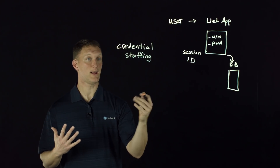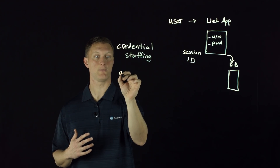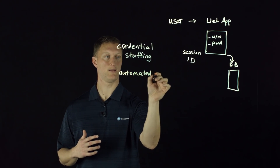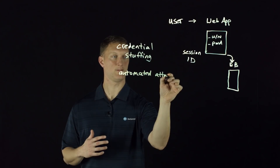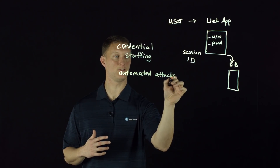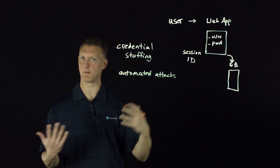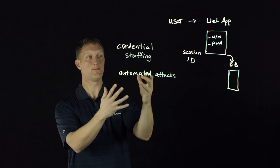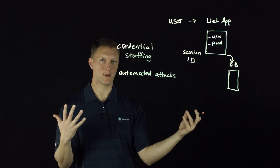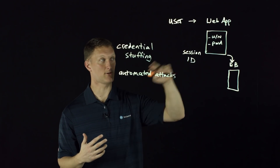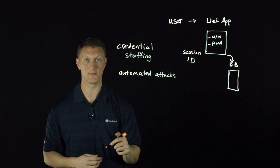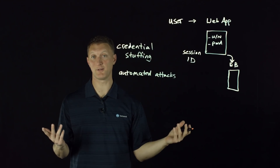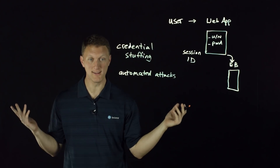There are also automated attacks — this is more general. This is where maybe you just use random usernames and passwords, not a known list like in credential stuffing. You just try random usernames and random passwords, stuffing them into the username and password fields of the web application. And if one of them works, then you're in.